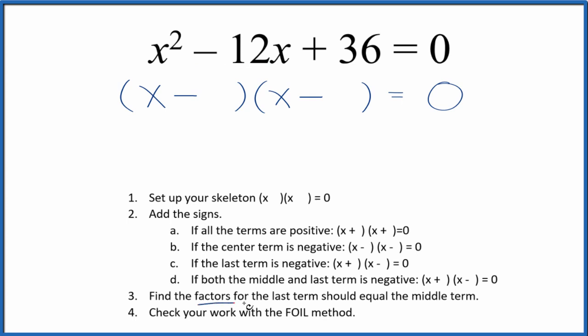Once we've done that, we find the factors for the last term, that's 36, that should equal the middle term. They should add up to the middle term. I know that six times six, that would give me 36. And six plus six, that's 12. So if we just put six in here, we're done.